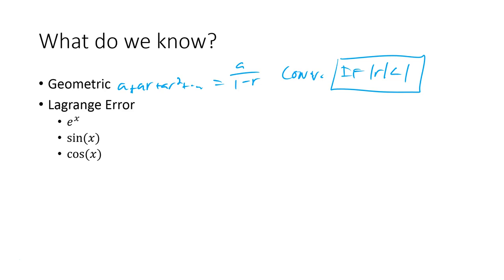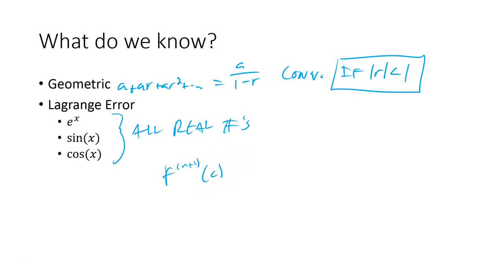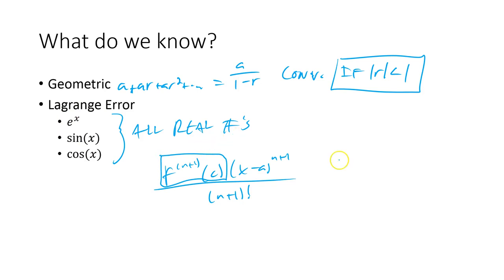When we started talking about Lagrange error, we talked about how we know that e^x, sine x, and cosine x converge for all real numbers. The unique thing about these functions is that we have a way to talk about their nth derivative, because the Lagrange error term is the (n+1)th derivative of some c value between the center and the x value you're approximating, times (x minus A)^(n+1) divided by (n+1) factorial. These are unique because the (n+1)th derivative of e^x is always e^x, and for sine and cosine it's always some form of sine or cosine, so the biggest it could be is 1, and the (n+1) factorial will always cancel it out.